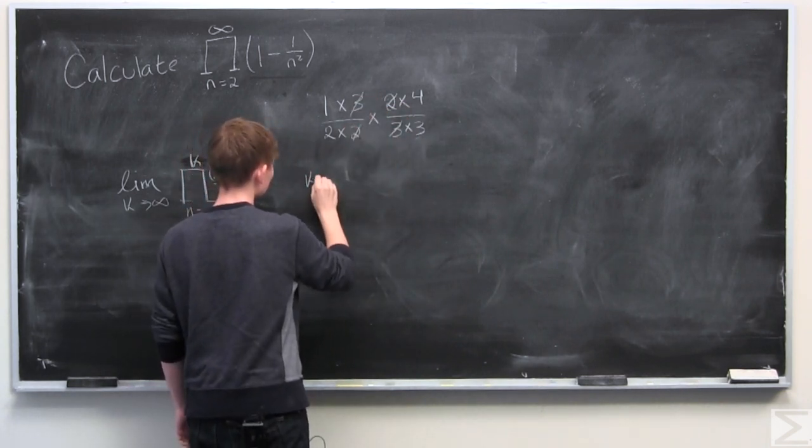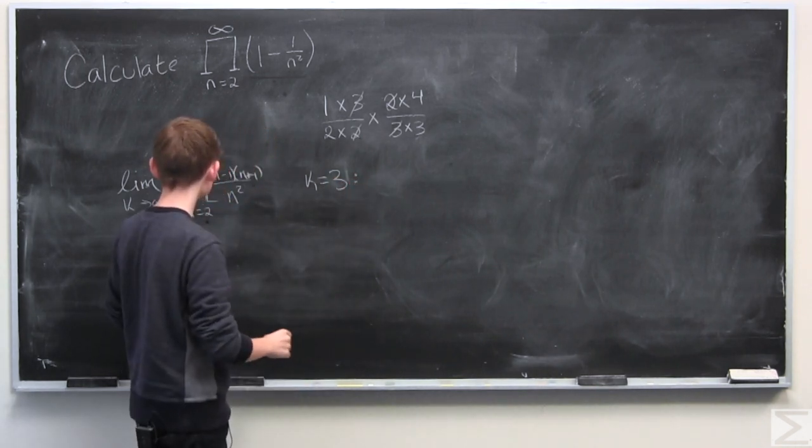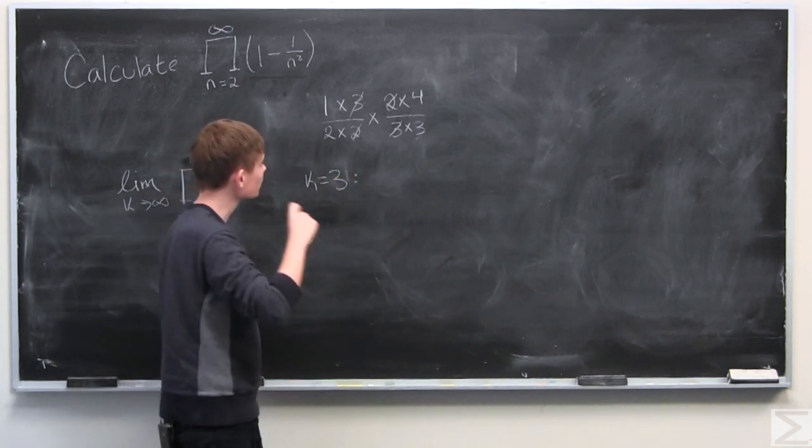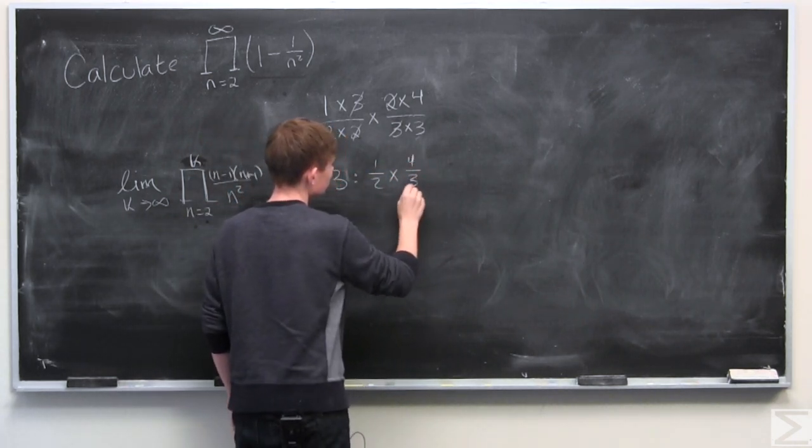And so when k equals 3 we get that the partial product is equal to 1 half times 4 over 3.